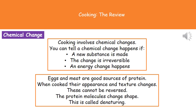If we consider one type of food that might be cooked quite often in your own homes — if we think about eggs and meat, both of them are very good sources of protein. And when we actually cook eggs and meat, their appearance and their texture changes.